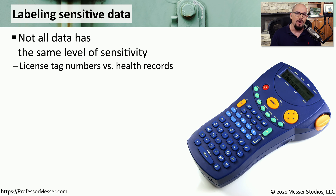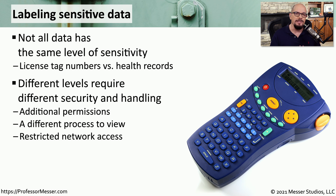Your health records are much more sensitive. They're very private, and it's something that other people should not normally have access to. This means that if we have two applications — one that handles license tag renewal and another one that handles health insurance — we would be applying a completely different type of security to both of those applications. There would probably be a completely different set of permissions between those two applications because they use such different data.